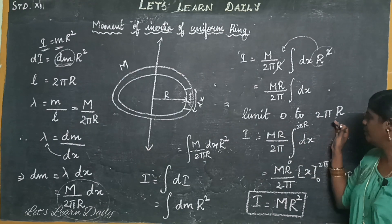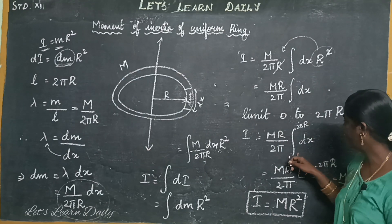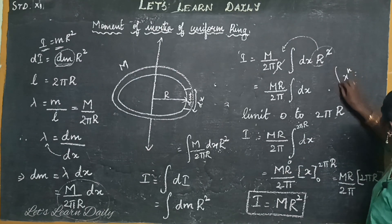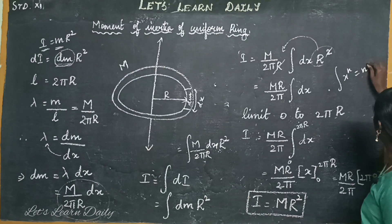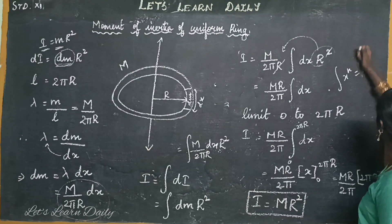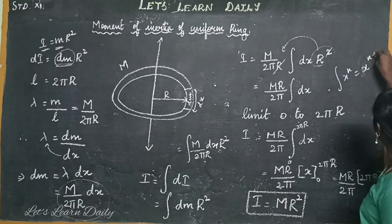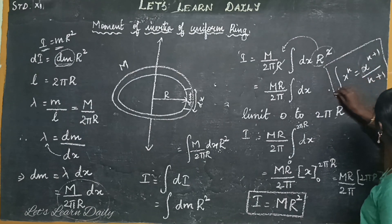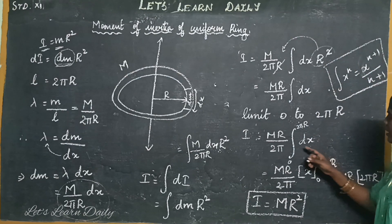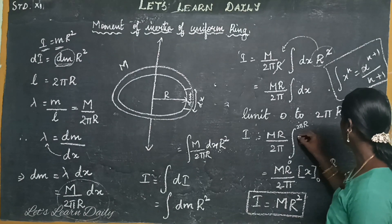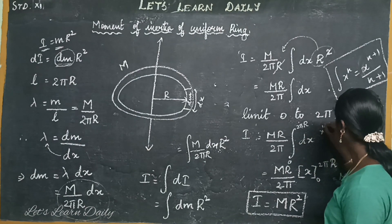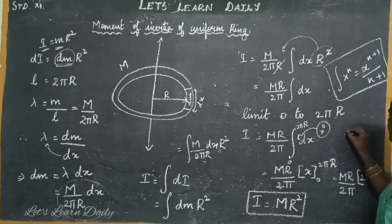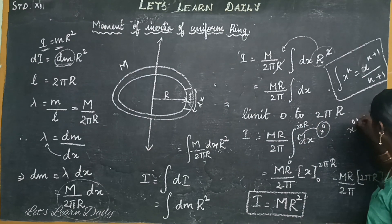r equals 2πr. So now we have integration from 0 to 2πr with dx. The x power formula applies here. The integration of x to the power n is x to the power n+1 divided by n+1. So we have to write the formula. x power is 0, so x power becomes 0 plus 1.